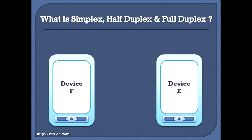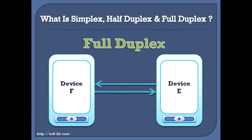Now, if we have two other devices, device E and device F. If both devices are transmitting and receiving at the same time, then the communication between them is called Full-Duplex. So Full-Duplex is a two-way simultaneous communication where the two devices can transmit and receive simultaneously. An example of a Full-Duplex device is a cell phone.